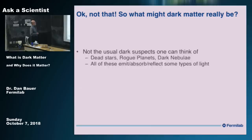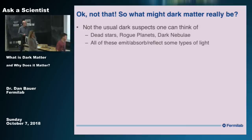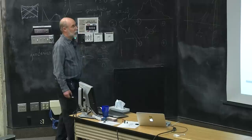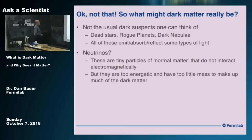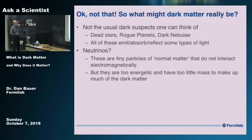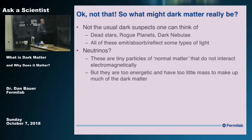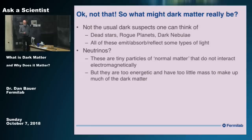What could dark matter be? What you might think of first is things like black stars, stars that are dead, or rogue planets wandering outside of the galaxy, or dark nebulae. The problem is all of those, in some way or another, emit, absorb, or reflect light, so they don't qualify. There is also a form of normal matter — neutrinos. People originally thought of these as possibly being dark matter because they don't interact electromagnetically. But they're far too energetic and have way too little mass to make up the dark matter, so they've already been ruled out.